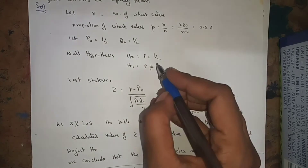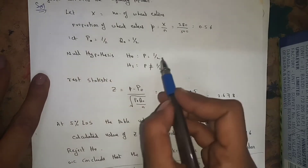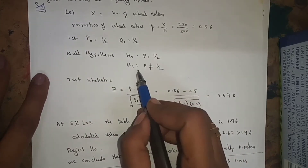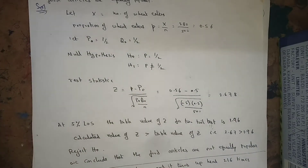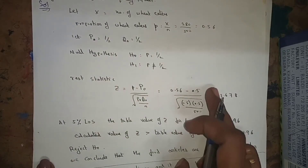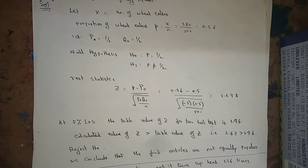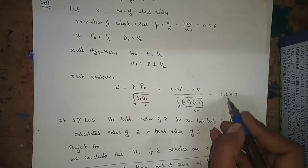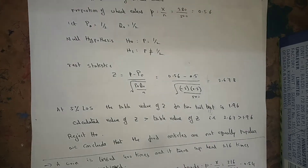We set null hypothesis H₀: p = p₀ = 1/2, and alternative hypothesis H₁: p ≠ 1/2 (two-tailed test). The test statistic is z = (p − p₀) / √(p₀·q₀/n) = (0.56 − 0.5) / √(0.5 × 0.5 / 500) = 2.678.